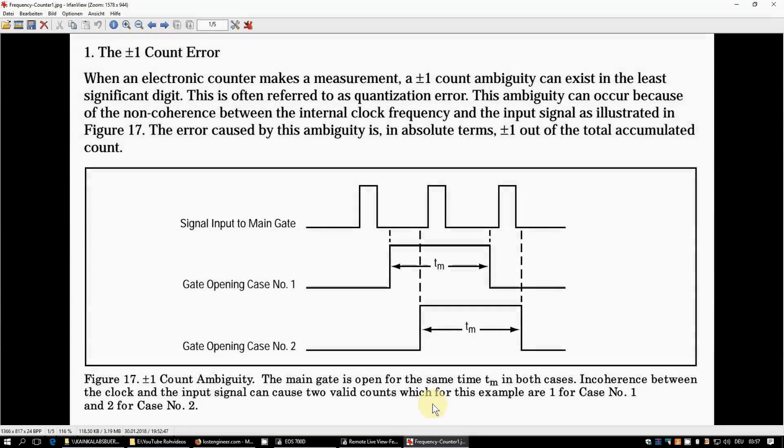So, now let's take a look at some diagrams out of this classical HP application note. Here we have a diagram explaining the classical plus minus one count error. You can see the gate time is fixed, but the gate doesn't know when your pulses are coming. And you can see in the first example, during the gate time only one pulse is counted. And in the second example, two counts are inside the gate time, so two counts are counted. There are extreme examples when the ambiguity can not only be plus minus one, but it could become slightly larger. It could all in all be two counts off. So, what you get is that your least significant digit won't be stable if you don't take any countermeasures. You will usually have a flickering of the last or least significant digit of plus minus one count.